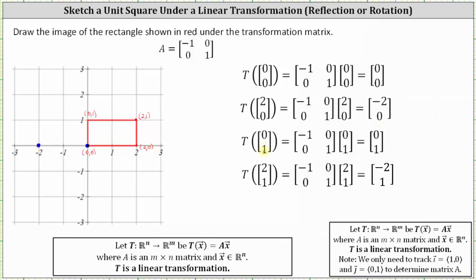The transformation of (0, 1) is equal to (0, 1), which indicates the point (0, 1) does not change under the transformation. And the transformation of (2, 1) is equal to (-2, 1), which means the point (2, 1) after the transformation is the point negative two, one — again on the left of the y-axis.